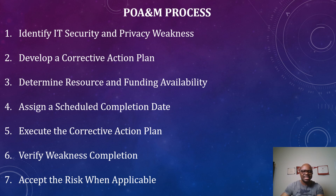Step four: assign a scheduled completion date. The completion date should not be left blank or marked as 'to be determined.' Every organization develops the PUEM according to their risk responses. If the risk is determined to be high, it must be remediated within 30 days. If the risk is medium, it must be remediated within 60 or 90 days. If the risk is low, it is either accepted or remediated within 180 days. So there must always be a scheduled completion date.